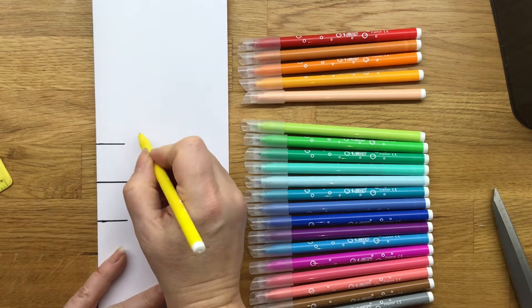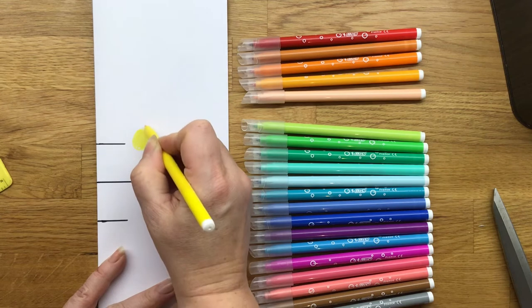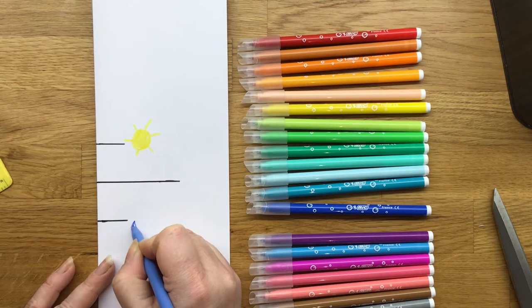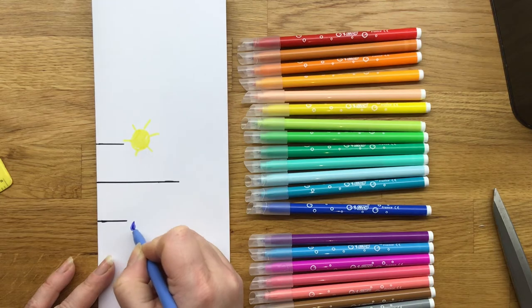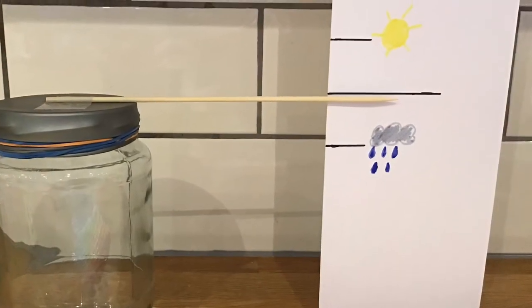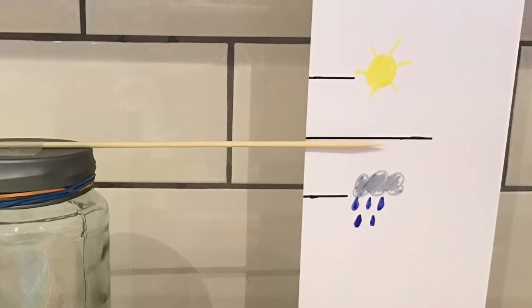You can ask Mr Thorley or Mr Freeze to explain to you how that works with pressure and the weather. For now I'm drawing a sun on the top line and then some rain and clouds on the bottom line. Stand your barometer jar now against the measuring gauge and you will see the stick move up and down depending on the weather.